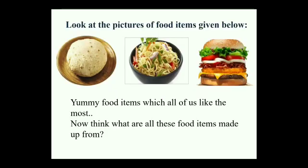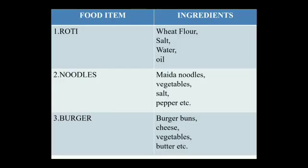Can you make the list of all the ingredients used in making all these three food items? We can make a small table. In the first column, we will write the name of the food item and in the second column, we will write the ingredients used. The first picture was that of a roti. The ingredients used to make a roti are wheat flour, salt, water and oil, mixed in fixed quantities to make a dough, and the dough rolled out to make a roti.